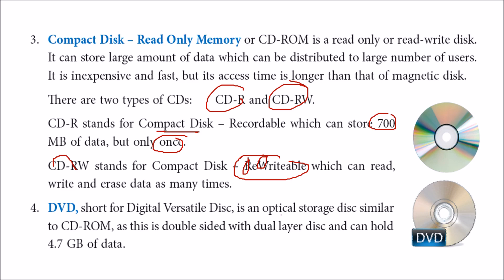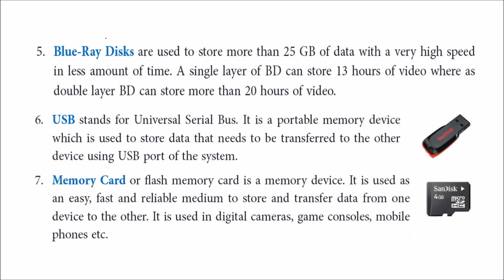DVD stands for Digital Versatile Disk. It uses optical storage, similar to a CD, but data is stored double-sided with a dual-layer disk, holding around 4.7 GB of data. Blu-ray disk (BD) holds more than 25 GB — around 30 hours of video — and a double-layered BD can save up to 20 hours of video.